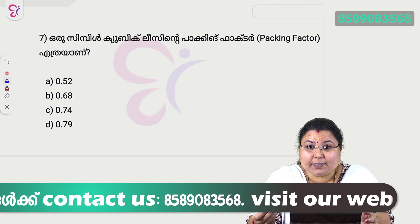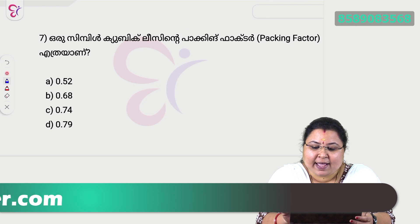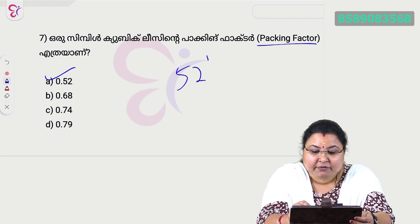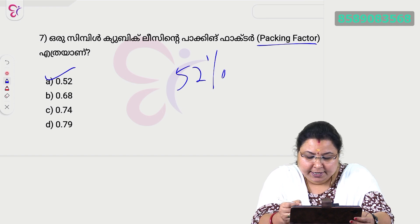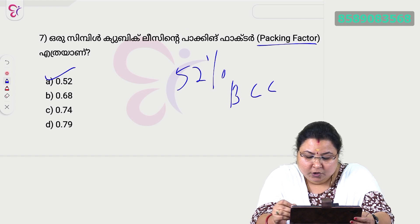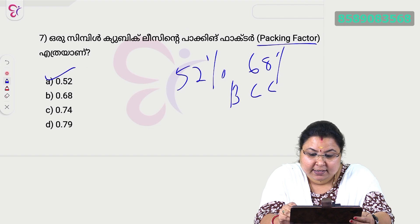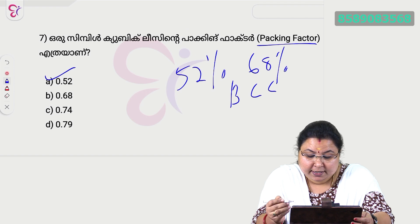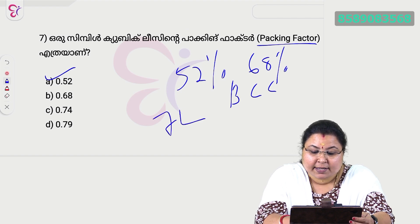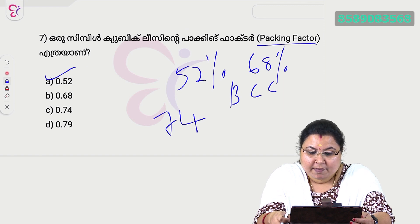What is the packing factor for a simple cubic lattice? The options are 0.52, 0.68, 0.74, and 0.79. Option A is correct: 0.52, that is 52% packing factor for simple cubic. For body-centered cubic (BCC) the packing factor is 0.68, and for FCC the packing factor is 0.74 (74%).